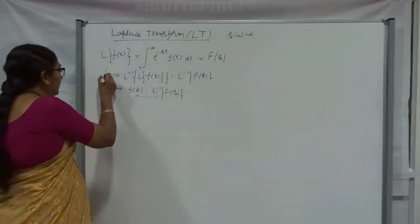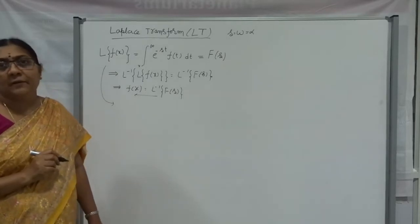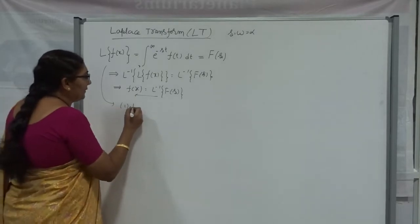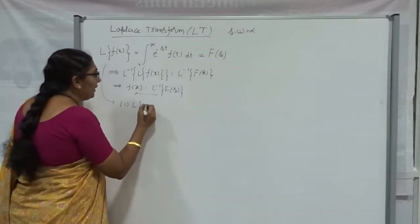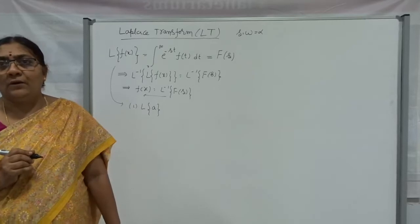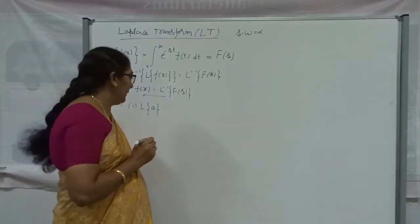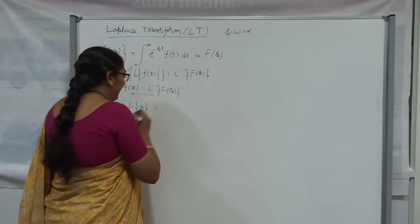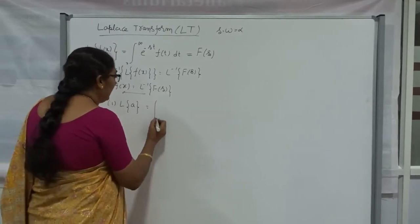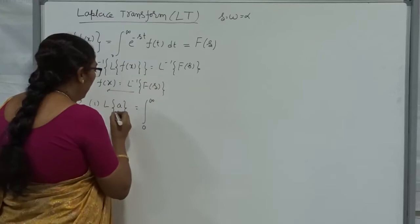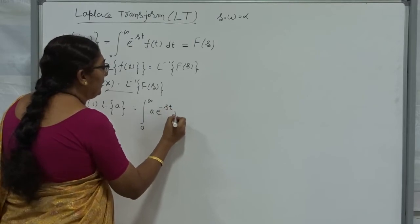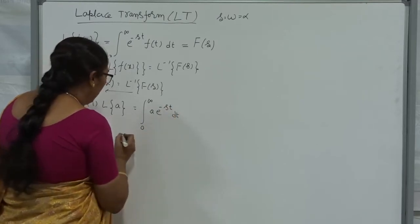The first standard function is the Laplace Transform of a constant. Say, Laplace Transform of a, where a may be negative, positive, or some constant value. I want to find out the Laplace Transform of a constant. From the definition of Laplace Transform, this can be written as the integral from 0 to infinity of A·e^(−st) with respect to t.